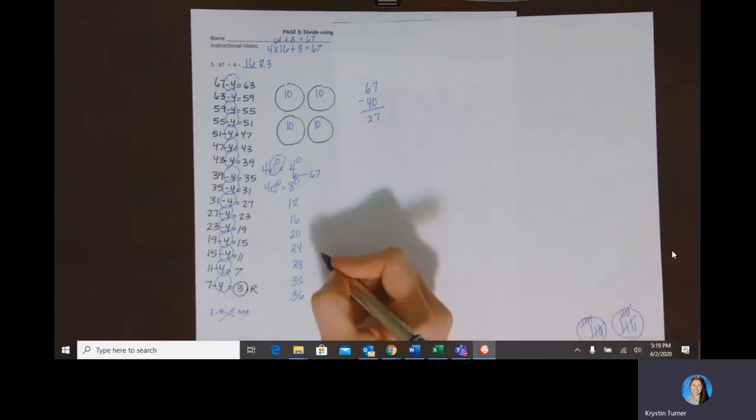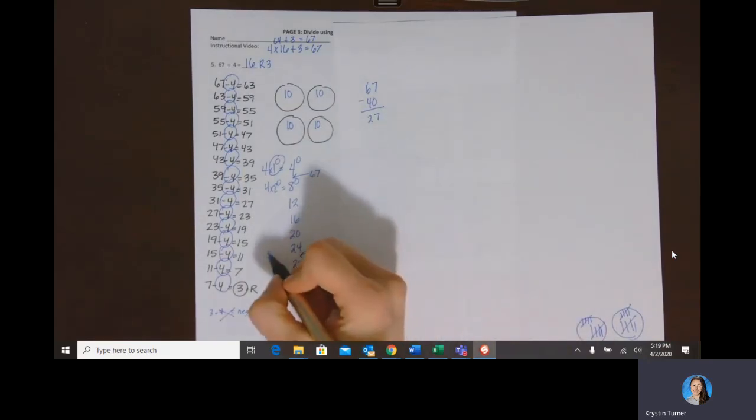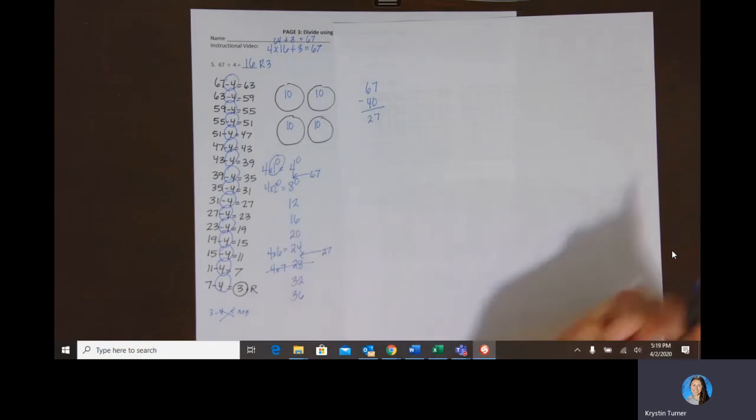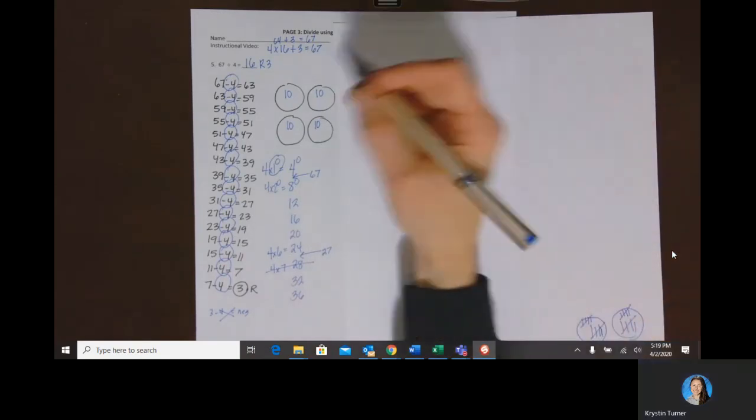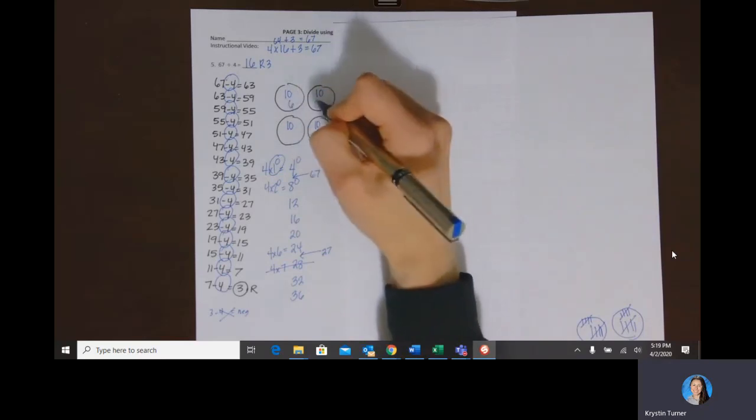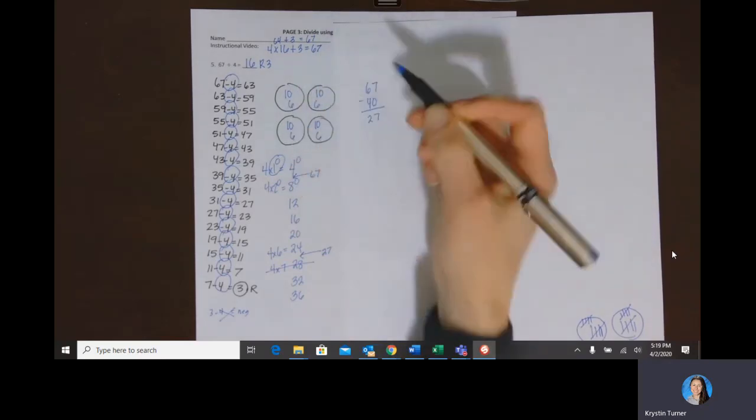So now when I'm looking, 27 would be right between, would live between this 24 and this 28. So four times six is 24 and four times seven is 28. So I can't put seven into each group, but I could put six more into each group. And then I would have used 24, right? Six, 12, 18, 24.